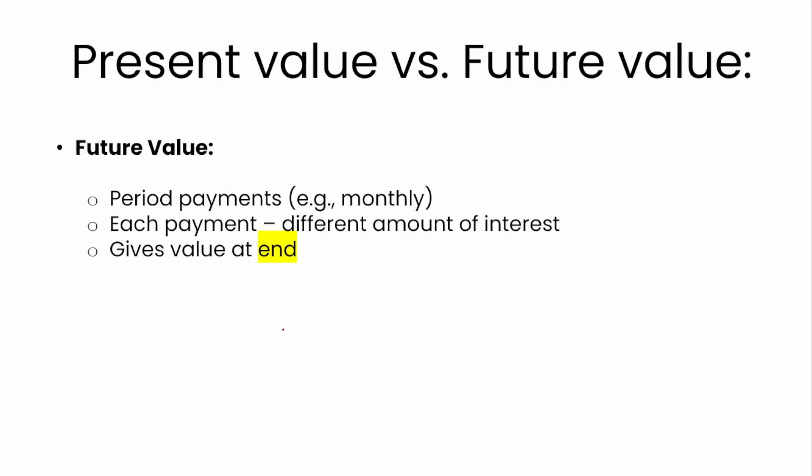First let's look at the difference between the present value and the future value. The future value, which we've discussed in another video, deals with periodic payments. Every month or year you're putting money into an account, and each payment generates a different amount of interest depending on how long it's been in. Payments at the very beginning generate more interest than the ones at the end, and all of the payments and interest get added together to give you a value at the end. So the future value deals with the value at the end.